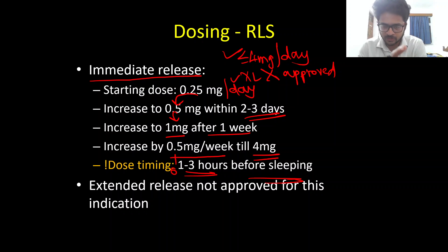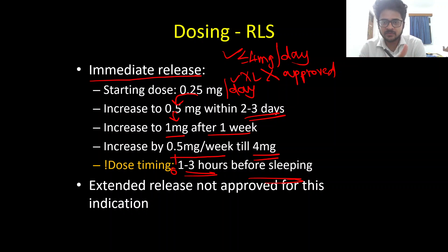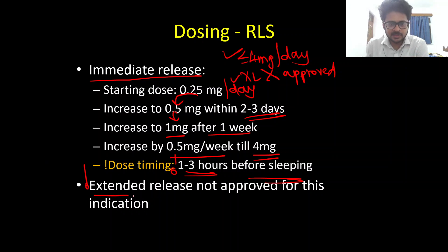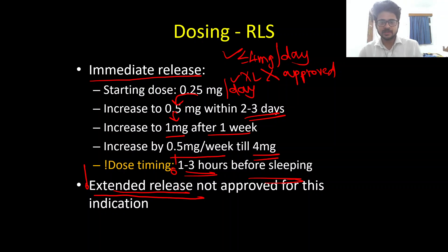To summarize for restless leg syndrome: start at 0.25 mg per day, increase to 0.5 mg over the next two to three days, then make it 1 mg once daily the following week, with further increases by 0.5 mg per week until reaching the desired effect or a maximum of 4 mg per day. Again emphasizing: the extended release formulation of ropinirole is not approved for restless leg syndrome — it is only approved for Parkinson's disease.